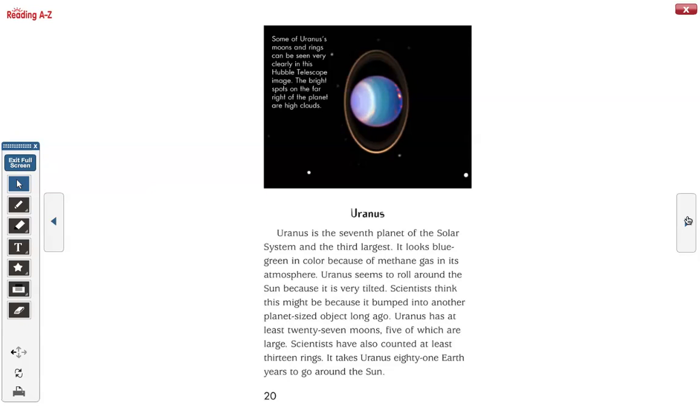Uranus is the seventh planet of the solar system and the third largest. It looks blue-green in color because of methane gas in its atmosphere. Uranus seems to roll around the sun because it is very tilted. Scientists think this might be because it bumped into another planet-sized object long ago. Uranus has at least 27 moons, five of which are large. Scientists have also counted at least 13 rings. It takes Uranus 84 Earth years to go around the sun.